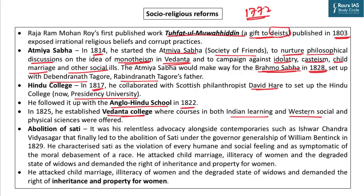His Vedanta College started teaching the philosophy of Vedanta and also mechanics, which was quite a new course at that time. The legacy of Raja Ramohan Roy is perhaps best known for the abolition of Sati. Due to the efforts of social reformers like Raja Ramohan Roy and contemporaries like Ishwar Chandra Vidyasagar, the cruel practice of Sati was abolished during the Governor-Generalship of Lord William Bentinck. In 1829, Raja Ramohan Roy characterized Sati as a violation of every humane and social feeling and as symptomatic of the moral debasement of a race.